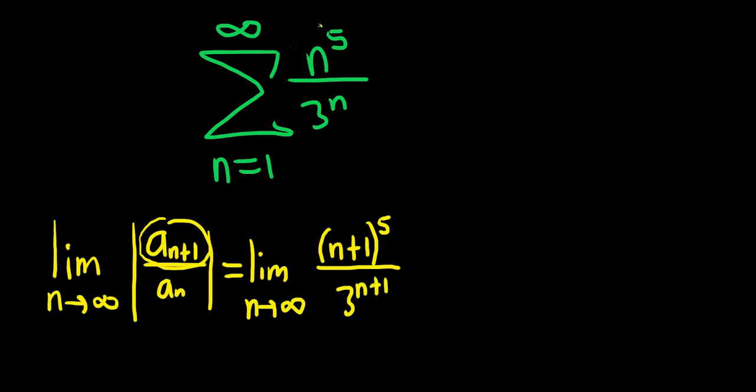Then we divide by this. It's the same thing as multiplying by the reciprocal. So times 3 to the n over n to the 5. Division is the same thing as multiplying by the reciprocal. So typically that's what you do in these problems. Alright, let's see what we can do here to simplify this.